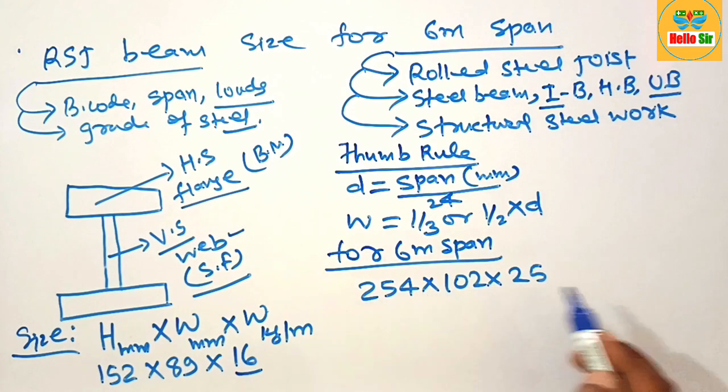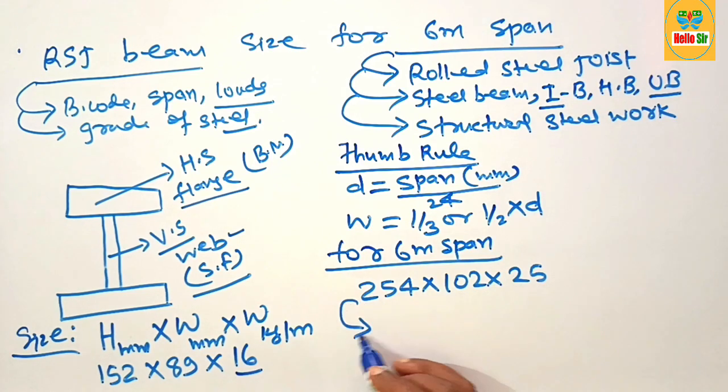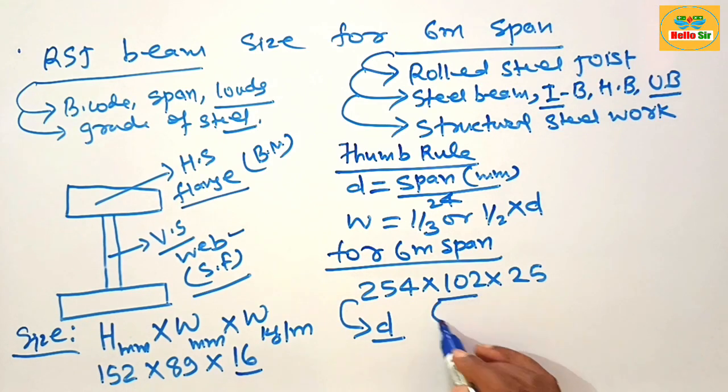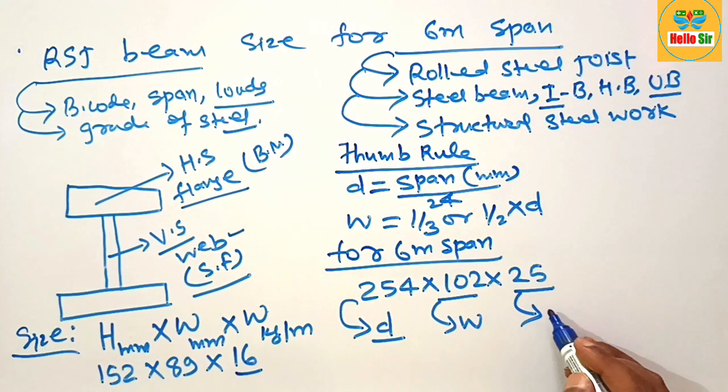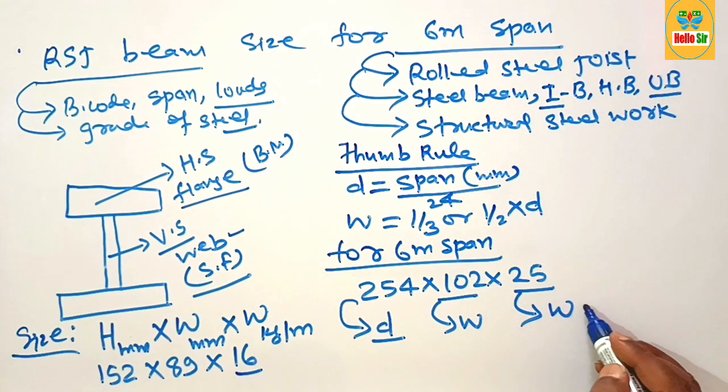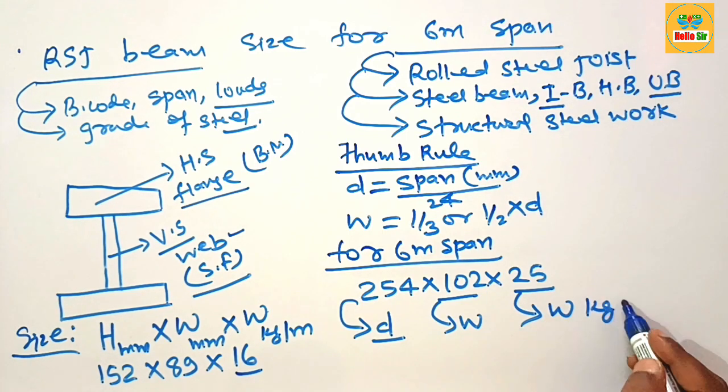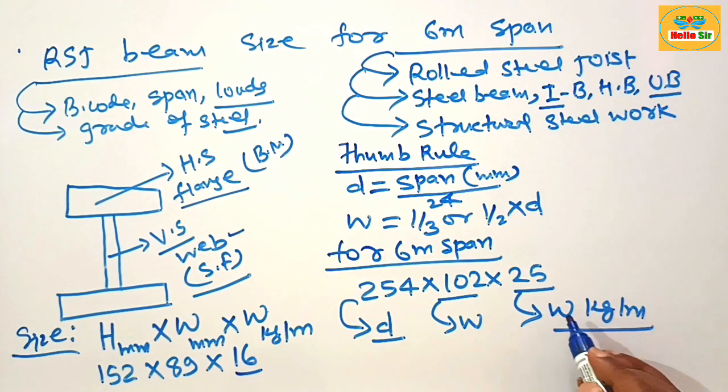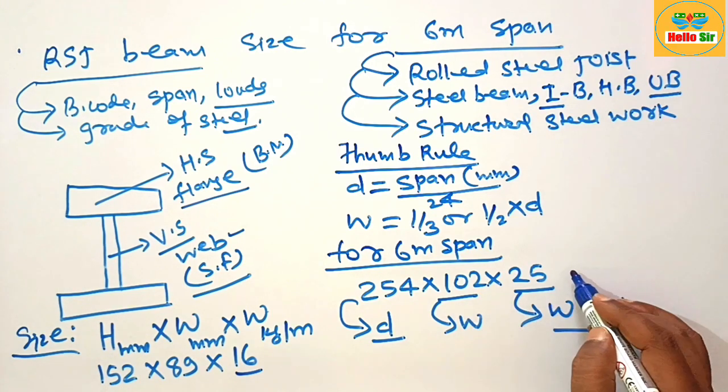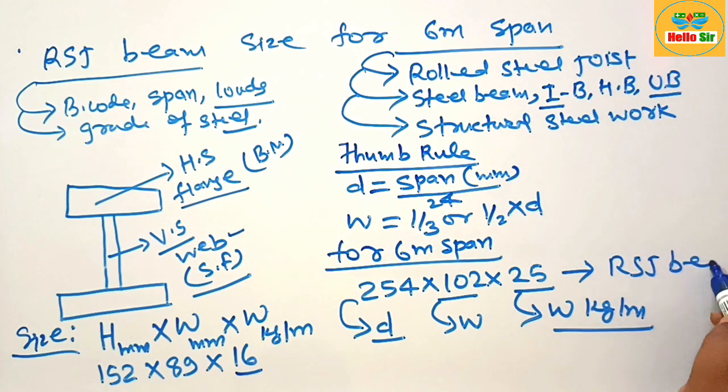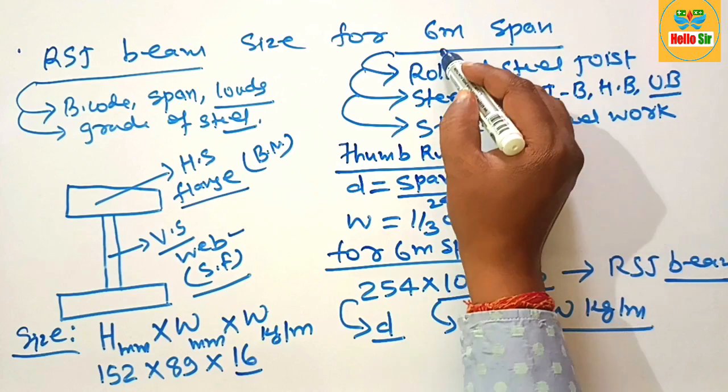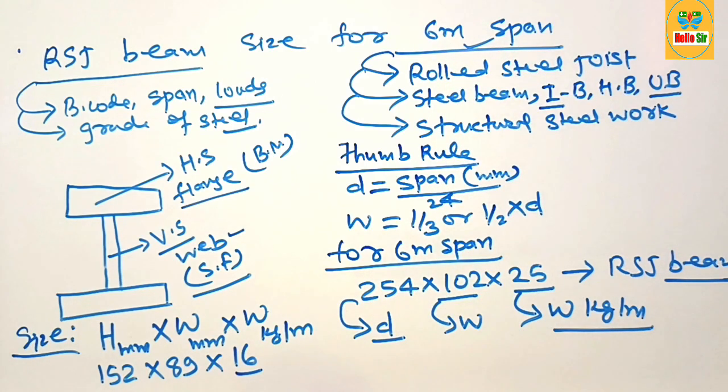What is their meaning? This includes depth section of the beam, this includes width of flange, and this includes weight of RSJ beam in kg per meter. It means you need something like this dimension of RSJ beam for your 6 meter span.